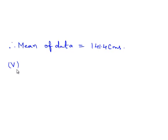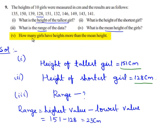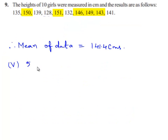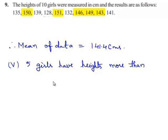Now let's move to the 5th part. Here they have asked us to find how many girls have heights more than the mean height. When we see the above tabular form, we can find that 5 girls have heights more than the mean height.